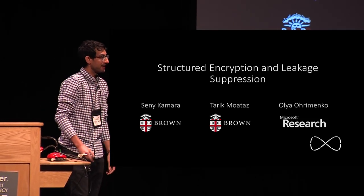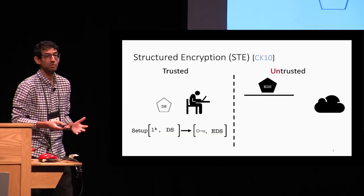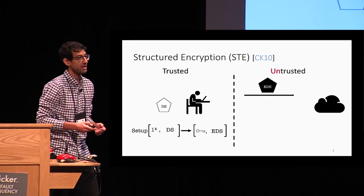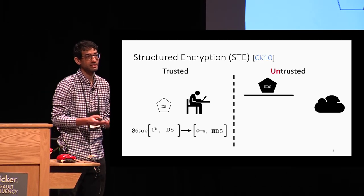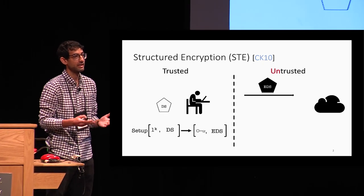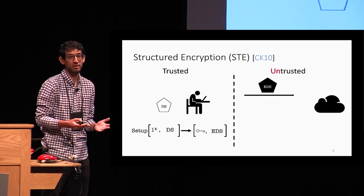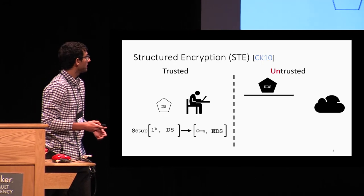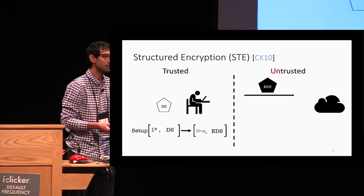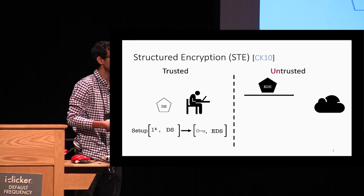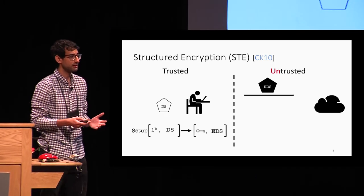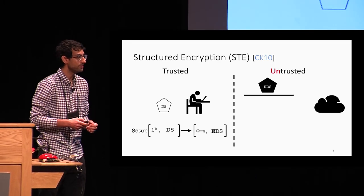Structured encryption was introduced by Chase and Kamara in 2010. It's a cryptographic primitive that encrypts a data structure in such a way that the user can privately query it later. At a high level, it works as follows: there is a setup algorithm that takes as input a security parameter and a data structure, and it outputs a key and an encrypted data structure that is sent to the server.